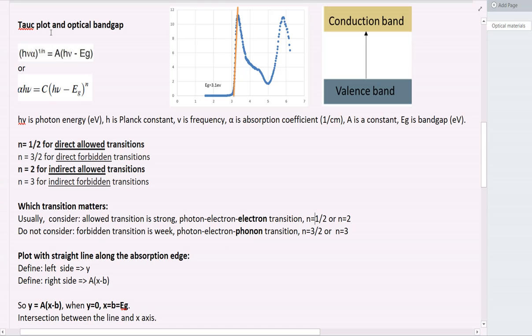And when we use the Tauc plot, we have to understand it from a linear line. So if we define the right side as y, and we define h mu as x, then we can change the Tauc plot to this equation. This equation is very familiar. It's a linear equation.